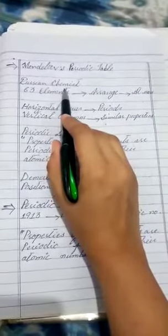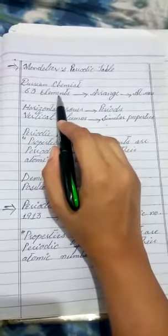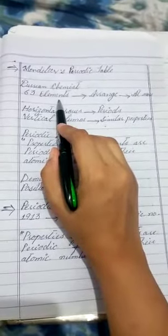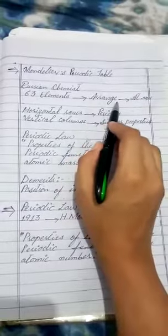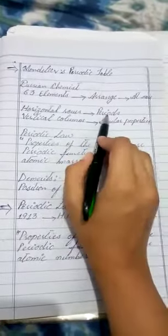Russian chemist Mendeleev arranged the known elements, only 63 elements, in the order of increasing atomic masses in horizontal rows called periods.